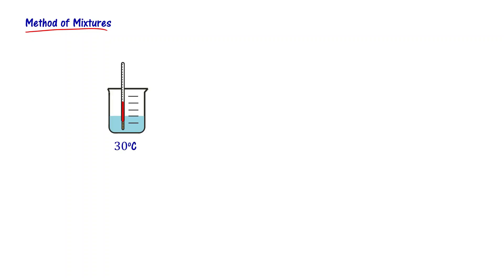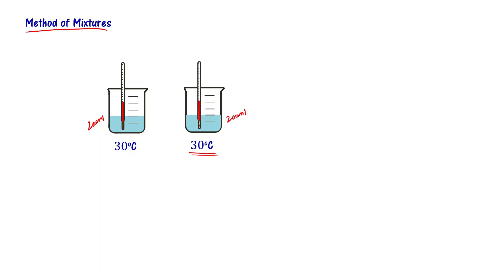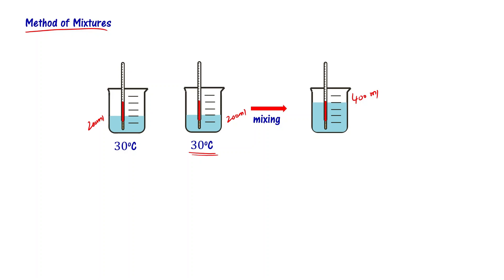To understand the concept of method of mixtures, let us start with one example. Let's say that I have 200 ml of water at 30 degrees centigrade in a beaker. Now if I mix these two, what happens? The mixture volume is going to be 400 ml. And what happens to the temperature? Temperature is going to be the same — 30 degrees.